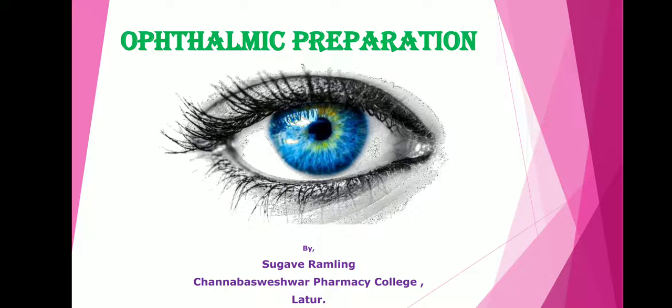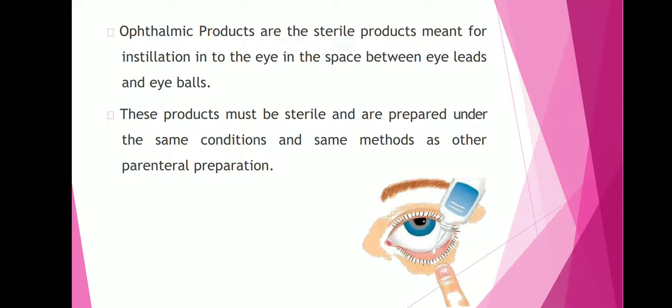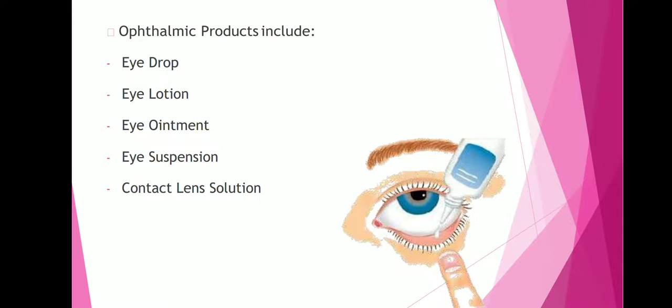Good morning friends. Today after watching this video you will be able to know various ophthalmic preparations. Ophthalmic products are sterile products meant for installation into the eye in the space between eyelids and eyeballs. These products must be sterile and are prepared under the same conditions and methods as other parenteral preparations. Ophthalmic products include eye drops, eye lotions, eye ointment, eye suspensions, and contact lens solutions.